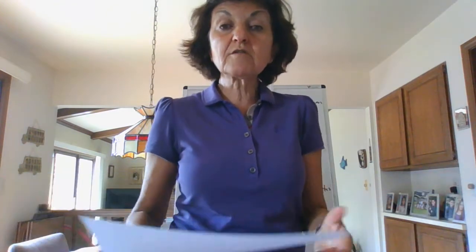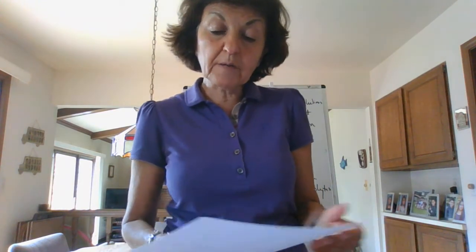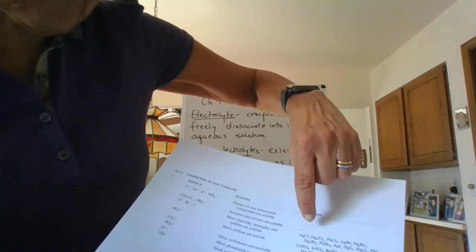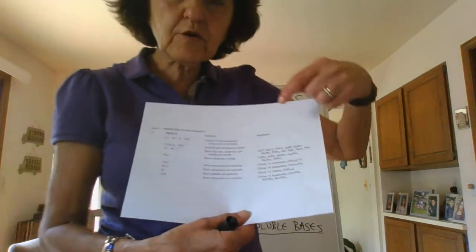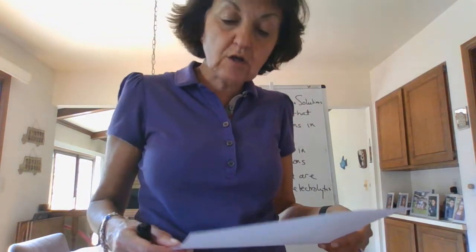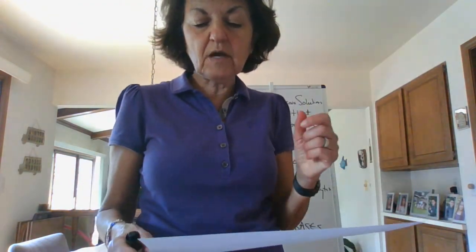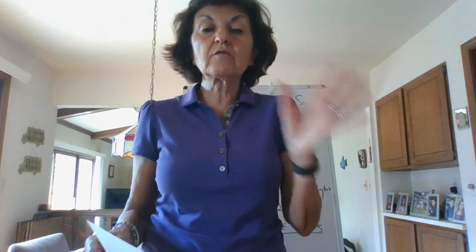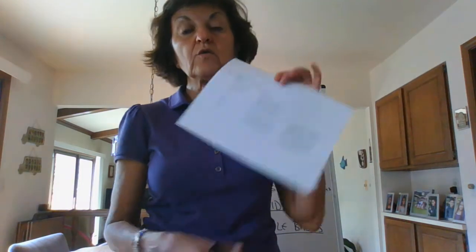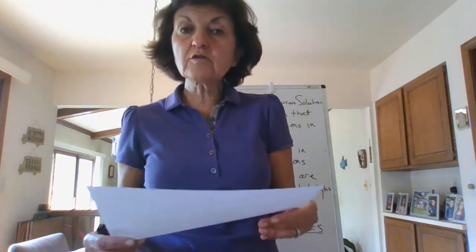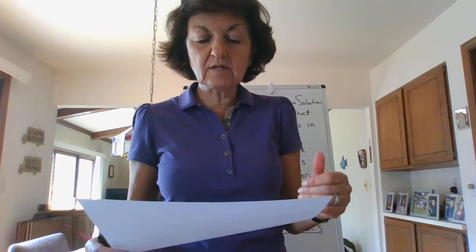But if a sulfate is hooked up to calcium, barium, strontium, silver, mercury, or lead, it is insoluble. So aside from silver, mercury, and lead, sulfates are insoluble when hooked up to calcium, strontium, or barium. While you're doing your OWL homework they may give you some other rules — just do whatever OWL wants for homework. But for the exam, you need to know this table. Those are your soluble compounds, and then we get into the insoluble ones.